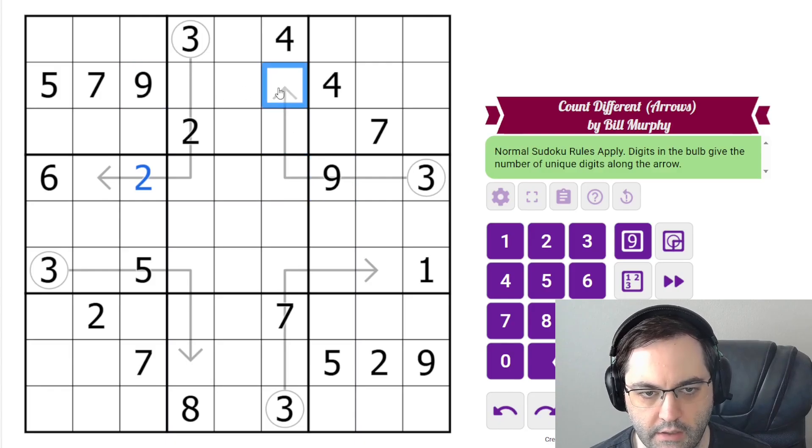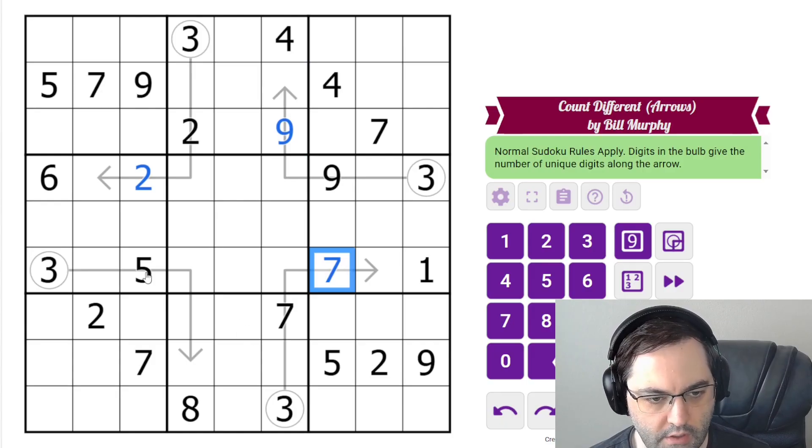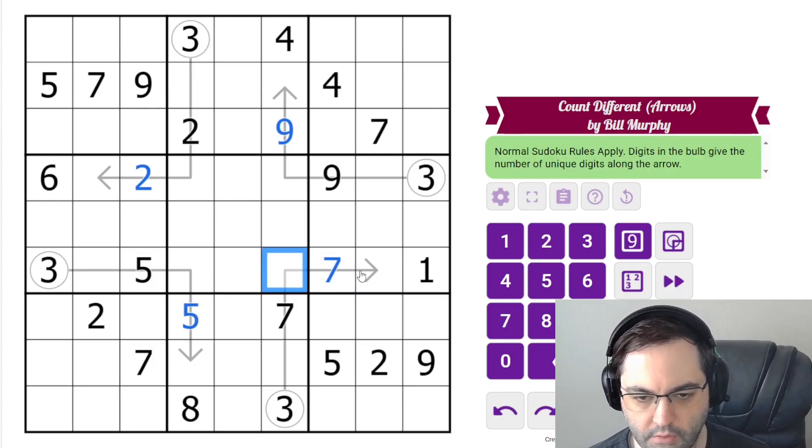Here we have a nine. Nine can't go here or here. Here we have seven, which must go here. And here we have five, which must go here.